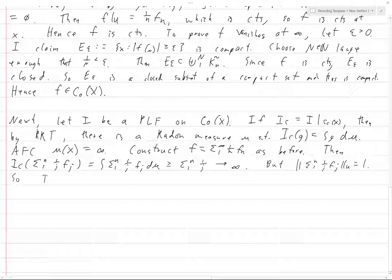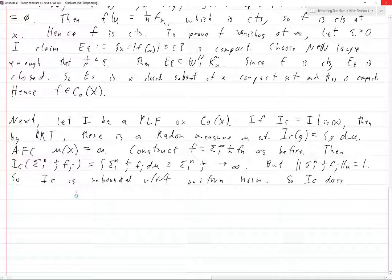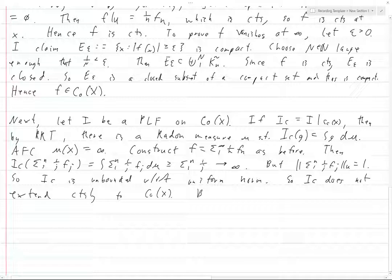So what does this mean? So I_C is unbounded with respect to the uniform norm. So I_C does not extend continuously to C₀(X). But it does, because I is a positive linear functional on C₀(X). This is a contradiction. And hence, μ(X) is finite.